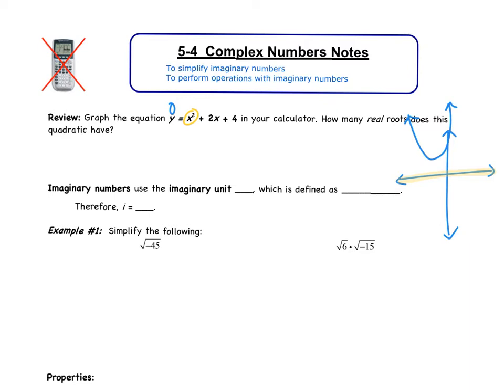Imaginary numbers use the imaginary unit i, which is defined as i squared equals negative 1. Therefore, i, well if I take the square root, i is going to be the square root of negative 1.